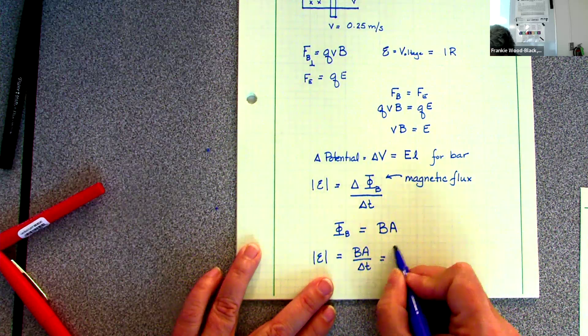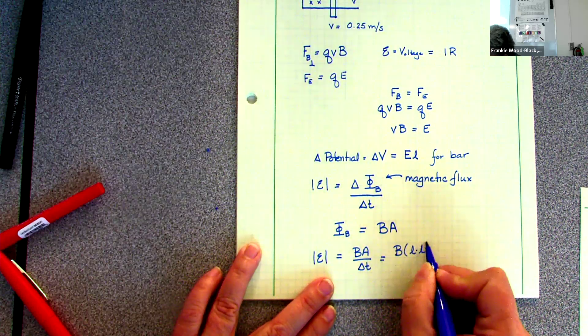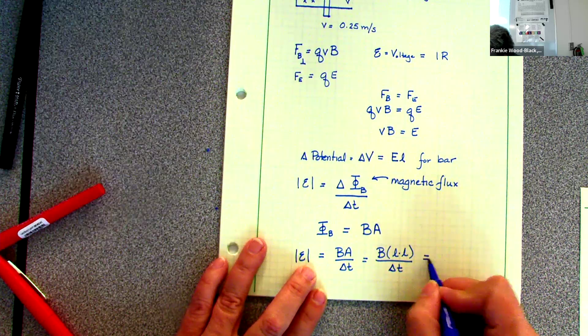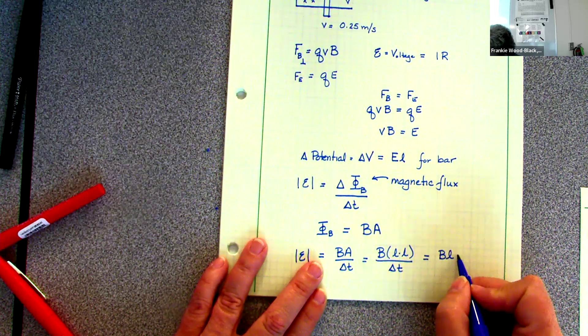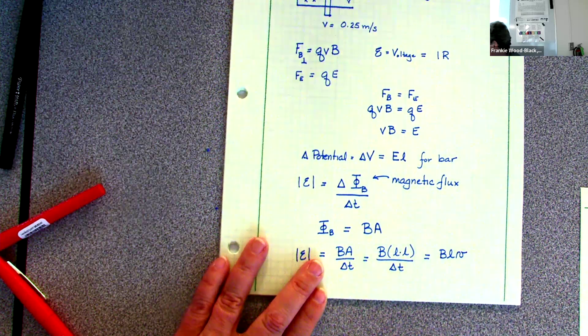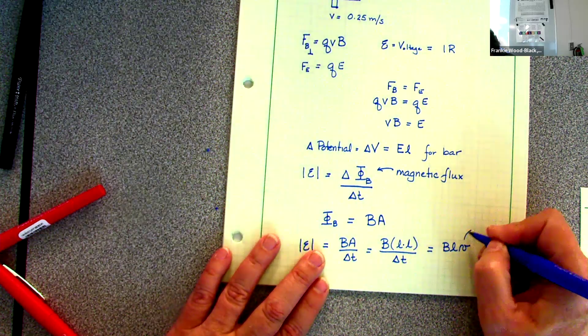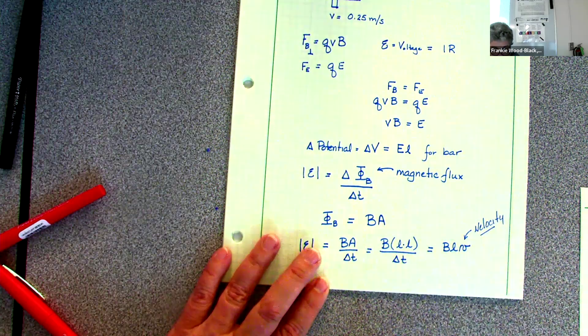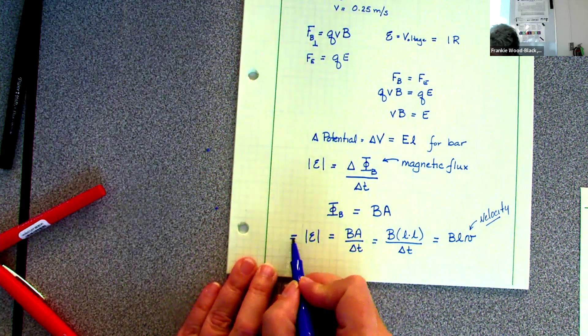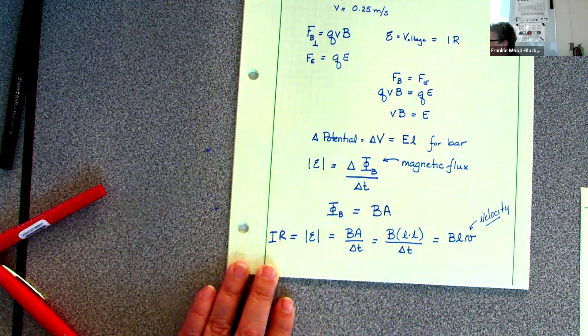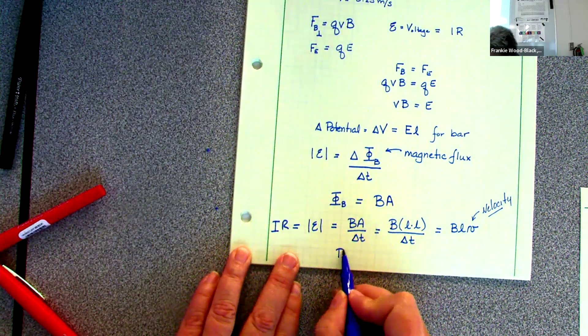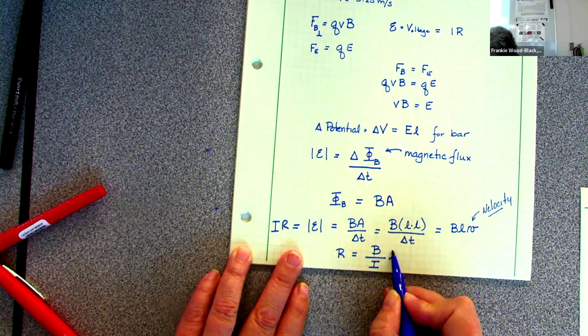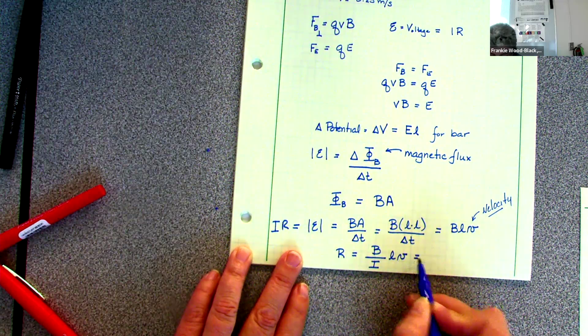I can rewrite A as if I've got a square, length times length times change in time. And I'm going to get this is B times my length times my velocity. And I'm going to use a script v to designate velocity. This is velocity. And that equals IR. So now if I'm solving for R, R is going to be B divided by the current, length times my velocity. And now I can just plug in my numbers.